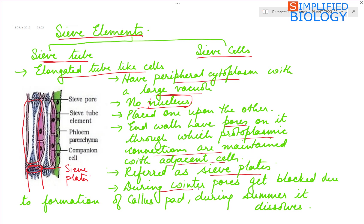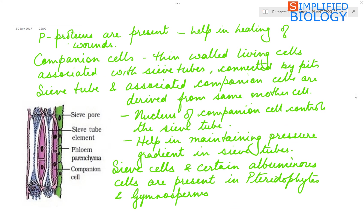During winter, the pores in the sieve plate get blocked due to deposition of callous carbohydrate, forming a callous pad. During summer, this callous pad dissolves. Also present in the sieve tubes are P-proteins, or phloem proteins, which help in healing of wounds to prevent leakage of substances.